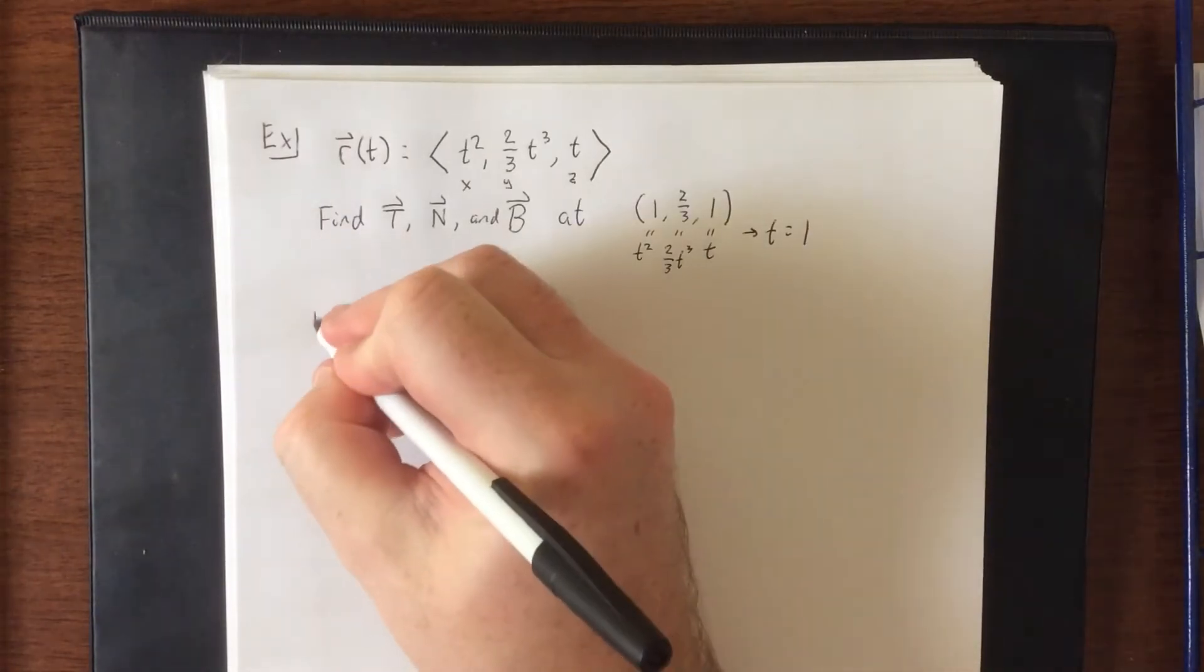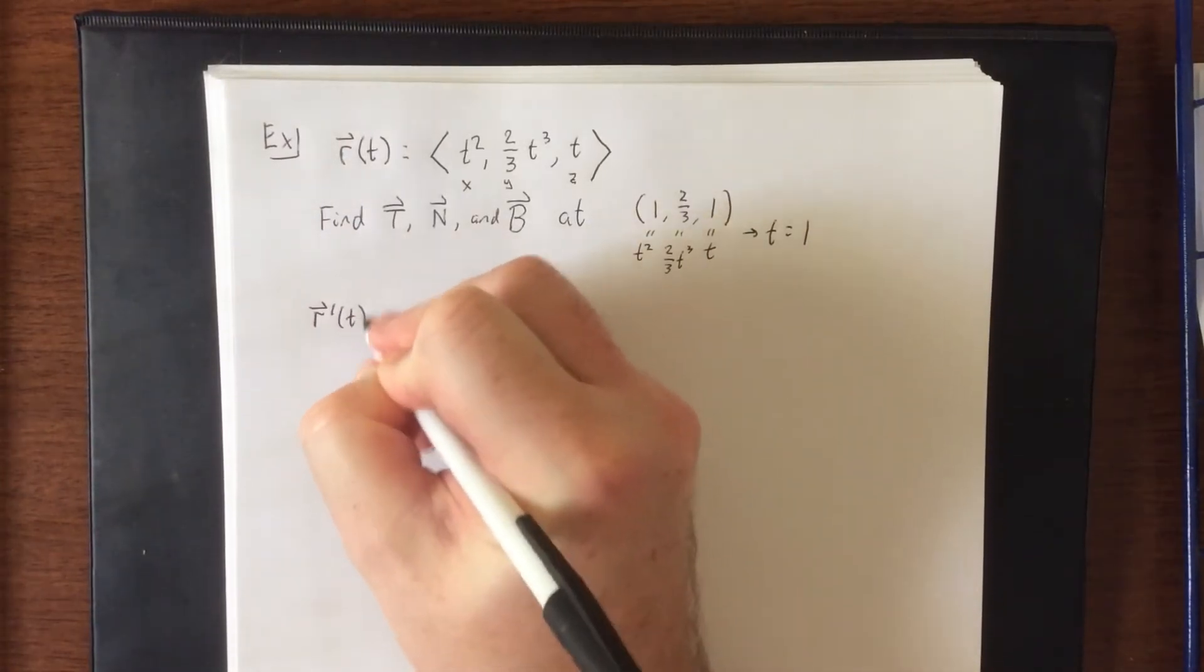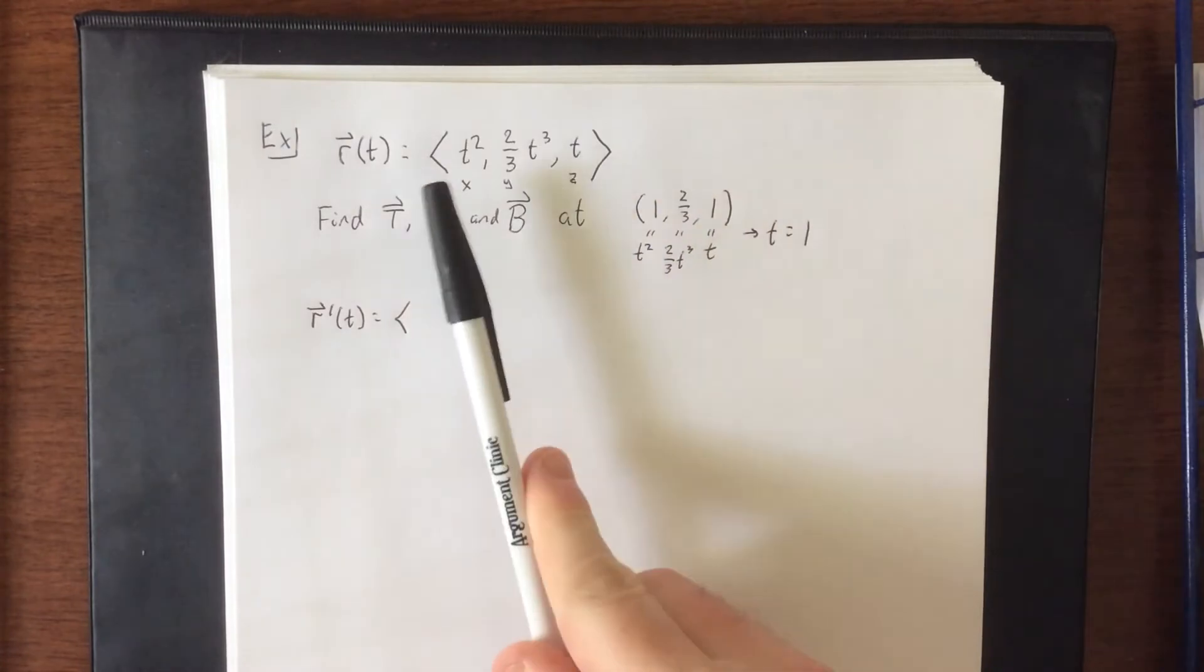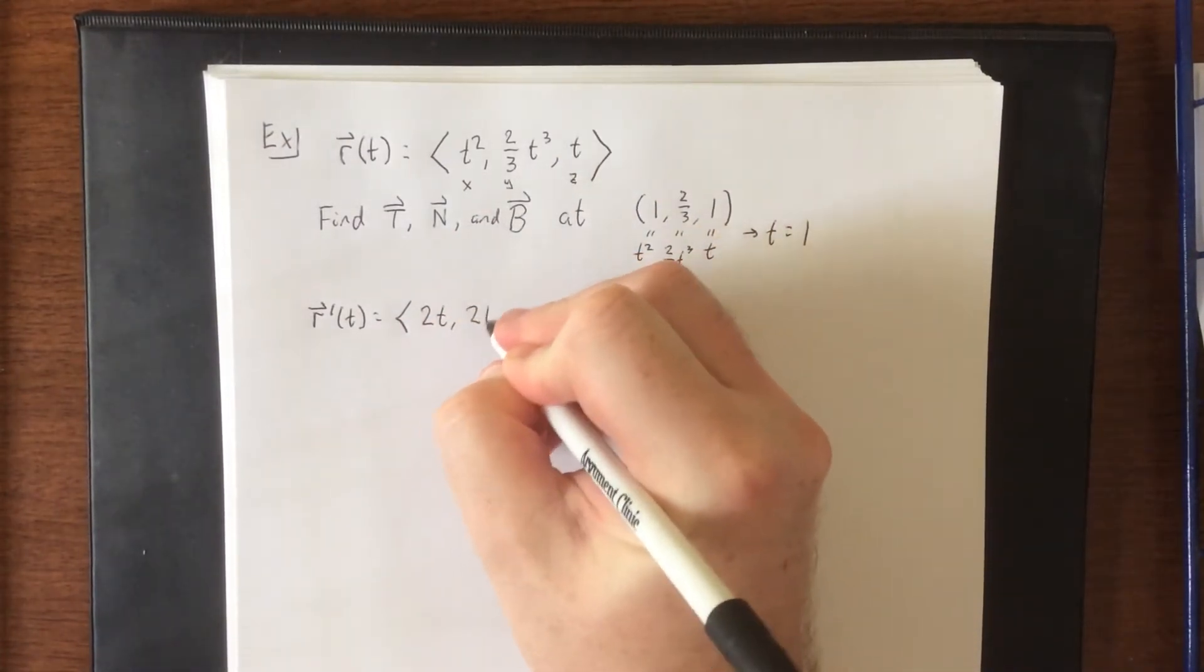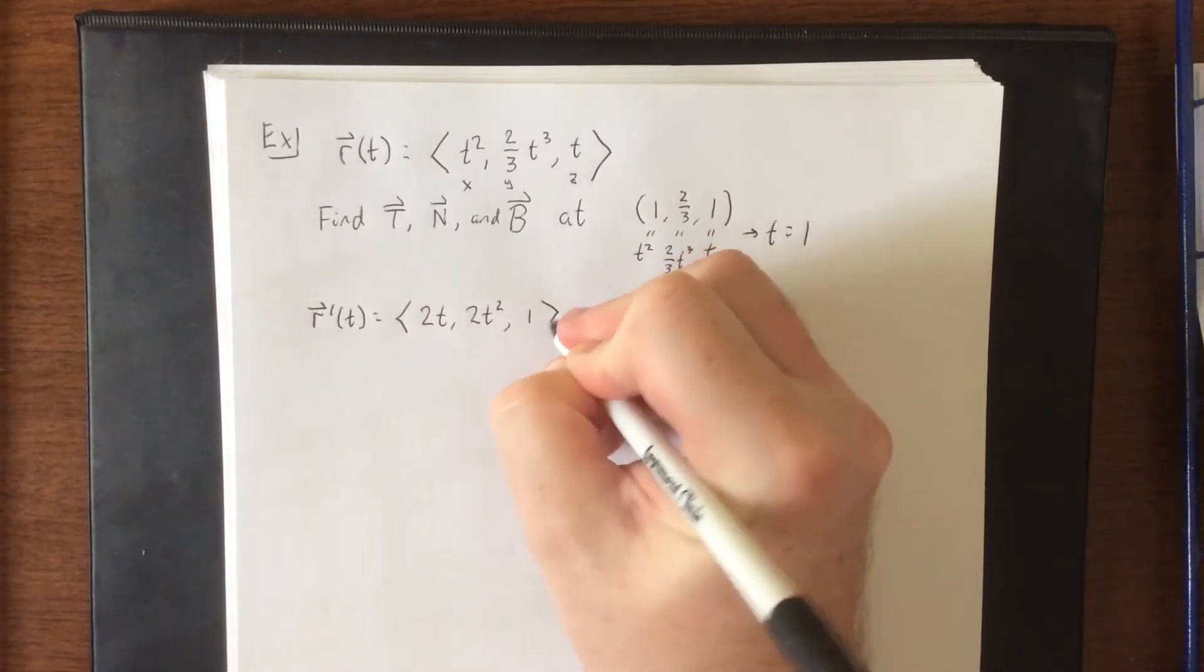So with that in mind, let's start with a derivative, as we typically do. Three derivatives, all three will be making use of the power rule. That'll be 2t, 2t squared, and one.